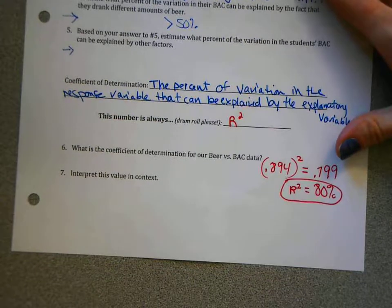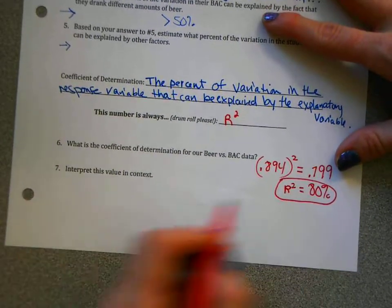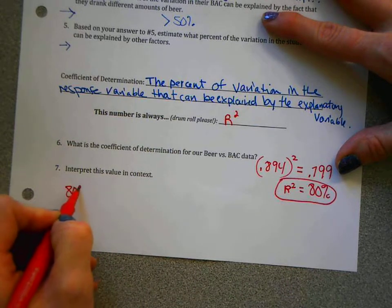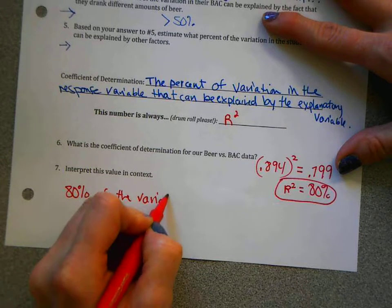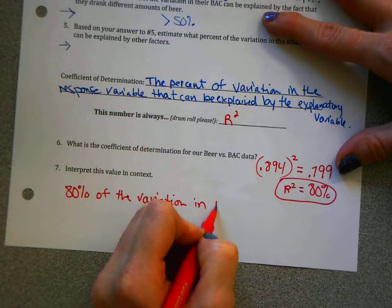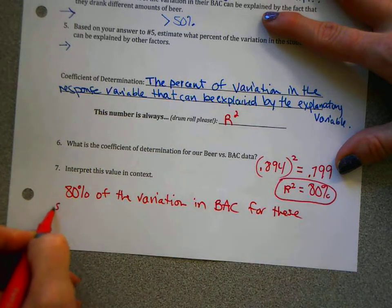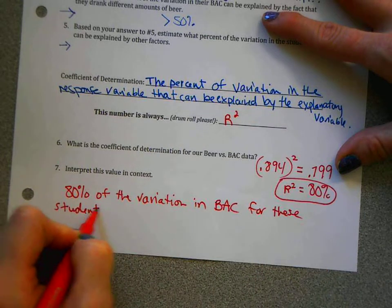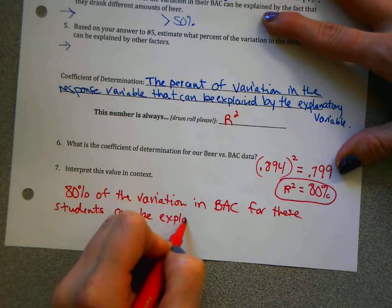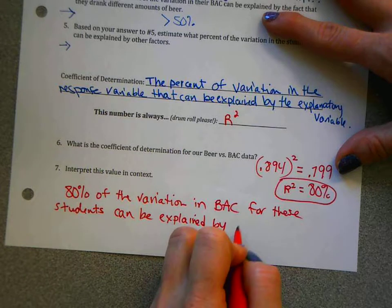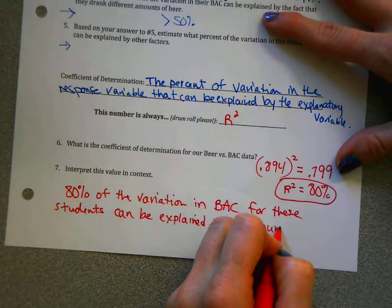So let's interpret that for the beer and blood alcohol content data. So what does 80% mean? It means 80% of the variation in blood alcohol content for students can be explained by the number of beers consumed.